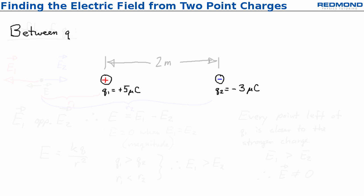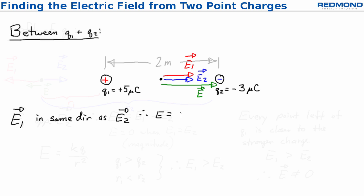Next, consider the region between Q1 and Q2. E1 points away from the positive charge, to the right, and E2 points towards the negative charge, also to the right. Since E1 and E2 are in the same direction, they have to add up, and there's no way for the net electric field to be zero.